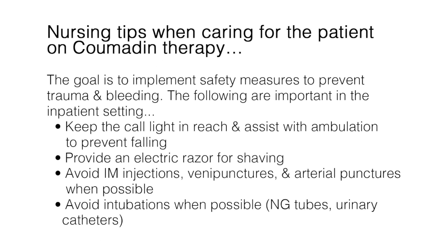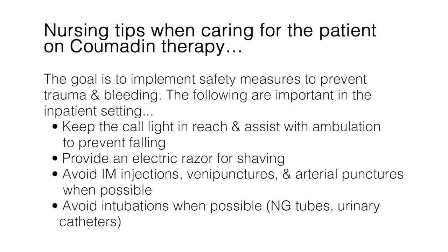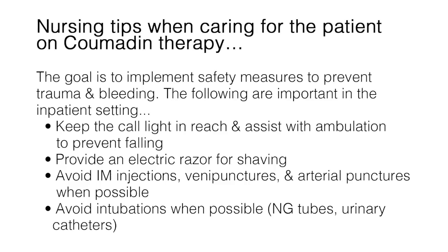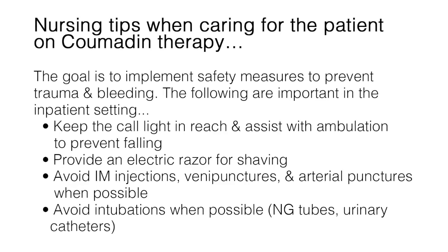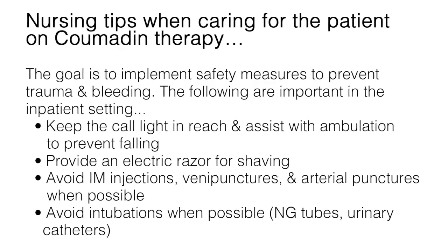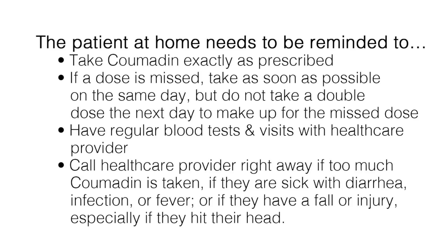Here are some nursing tips when caring for the patient on Coumadin therapy. The goal is to implement safety measures to prevent trauma and bleeding. In the inpatient setting: keep the call light in reach and assist with ambulation to prevent falling, provide an electric razor for shaving, avoid IM injections, venipunctures, and arterial punctures when possible, and avoid intubations when possible, such as NG tubes and urinary catheters. The patient at home needs to be reminded to take Coumadin exactly as prescribed. If a dose is missed, take it as soon as possible on the same day, but do not take a double dose the next day to make up for the missed dose.